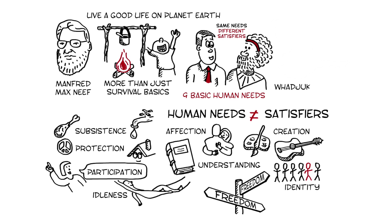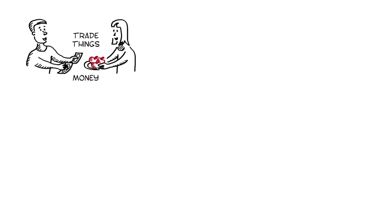For example, the way Wadjuk Nyungar people living here 250 years ago satisfied their needs for subsistence or participation is not the way we do it here today. In the past, humans would trade actual things to get their basic needs met. These were the first economies. Nowadays, most people on earth use money to purchase things they believe will meet their needs. But it's interesting to notice that not one of the nine fundamental human needs is money.